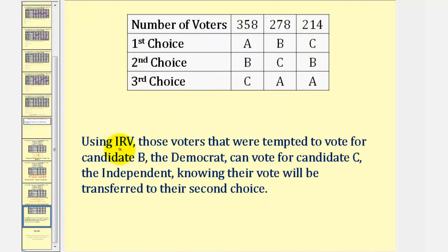However, it is important to emphasize that the instant runoff method does address insincere voting. Those voters who were tempted to vote for the Democrat, candidate B, can now vote for their preferred candidate, candidate C, the independent, knowing that if their candidate is eliminated, their votes would go to their second choice, candidate B.